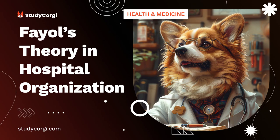Fayol's theory consists of two parts: management functions and management principles. Functions answer what the manager does, and principles answer the question of how he does it. There are only five functions: planning, forecasting, organization, coordination, command, and control. Fayol laid the foundation for the structural-functional approach, so named because levels of management described all functions. Later, Fayol identified 14 principles of management, which he structured into main and secondary ones.